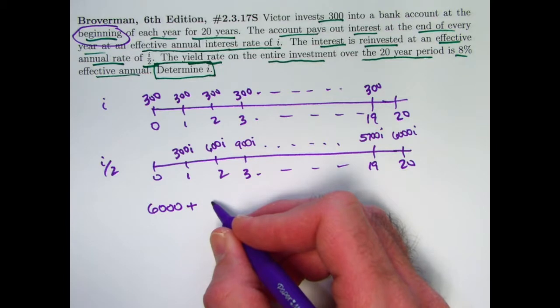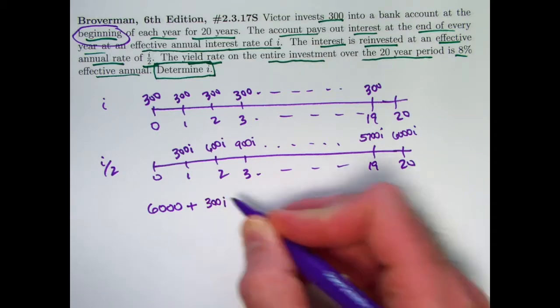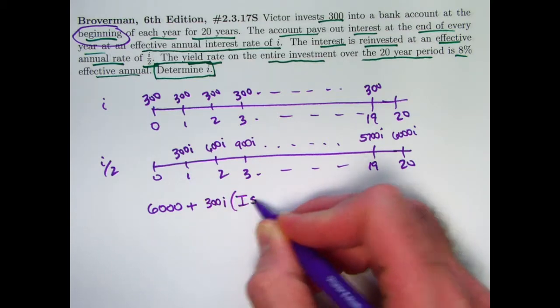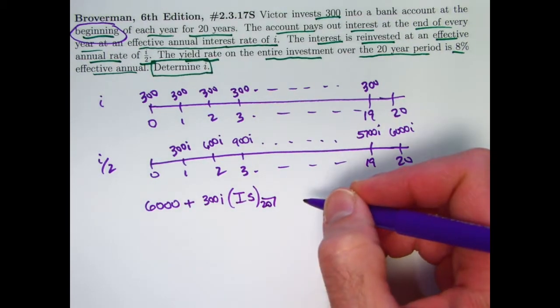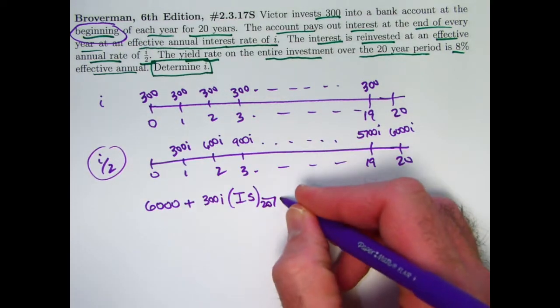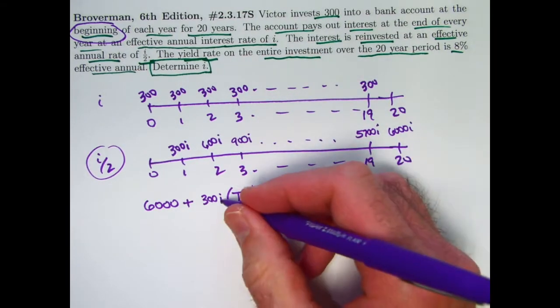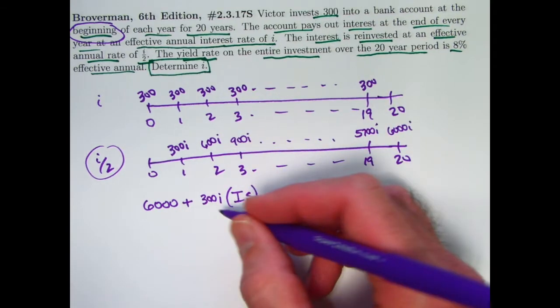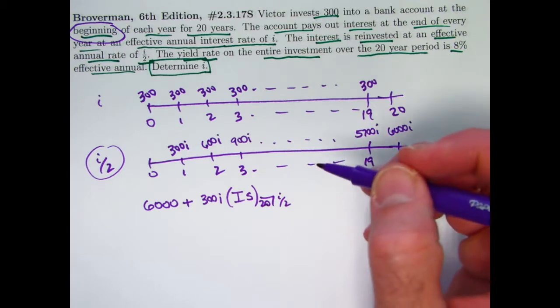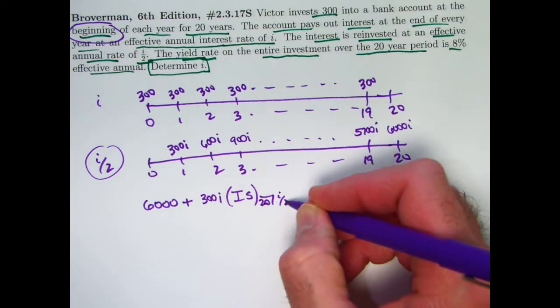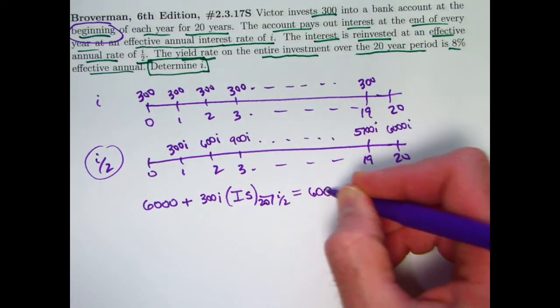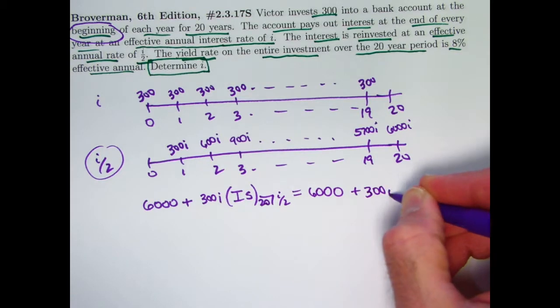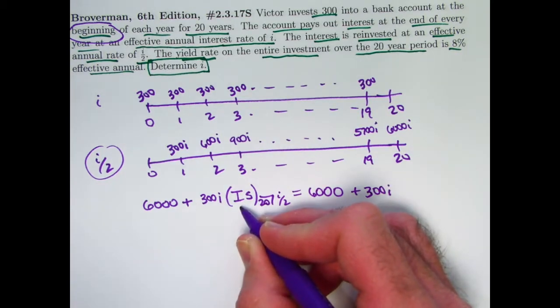In the second account, it's an increasing annuity immediate. The future value is going to be 300i times is sub 20. And the interest rate for that one is going to be that one right there, i over 2. This is an i there, not an i over 2. That's coming from the first account. 300i is the interest earned from the first account in the first year. But this needs to be an i over 2 because that's the interest rate for the second account.